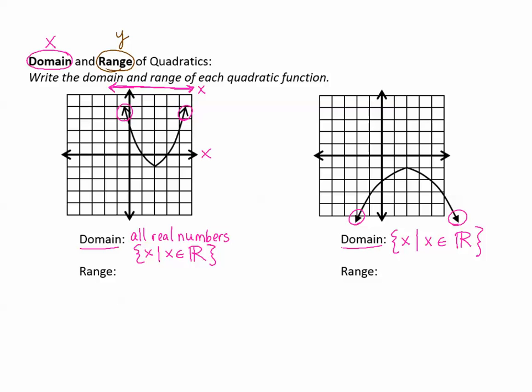Range is a little trickier, because there is a restriction, since there is a maximum or a minimum. Range, like the y-axis, we look up and down. So looking down, this is the lowest that the graph goes right here. What y value is the lowest that it goes? That's at negative one. So the lowest it goes is at negative one, but then what does the graph do? It goes up, up, up, up, and because of the arrow, we see that it's going up forever. So when it goes up, we want to think of everything bigger than negative one. Going up means greater than or equal to because it can reach negative one.